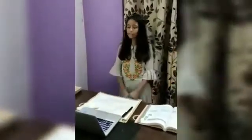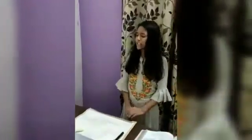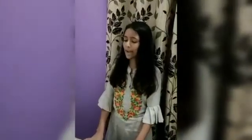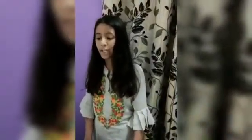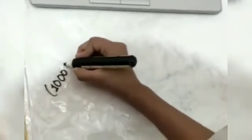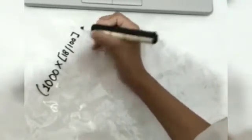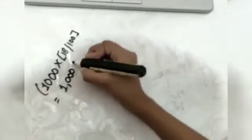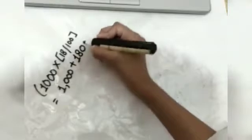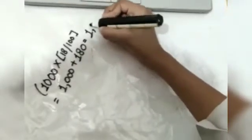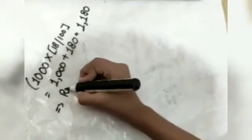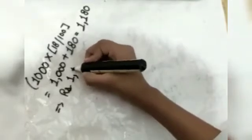GST is a single tax on supply of goods. For example, if the GST rate is 18% on the supply of goods worth Rs. 1000, the final price will be Rs. 1000 plus Rs. 1000 into 18 divided by 100, which is Rs. 1000 plus Rs. 180. The answer will be Rs. 1180. So our final answer will be Rs. 1180.